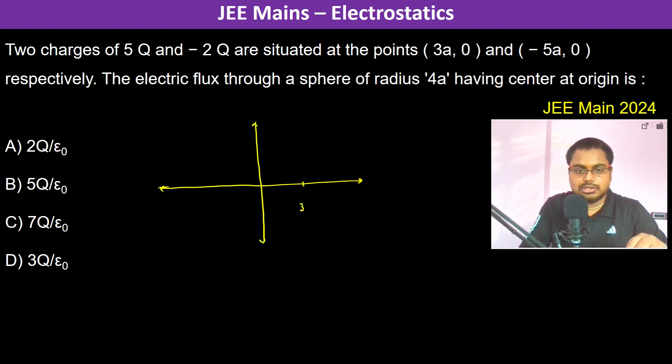So this is +3a, 0 and this is -5a, 0. This is 5q and this is -2q. The electric flux through a sphere of radius 4a having center at the origin.